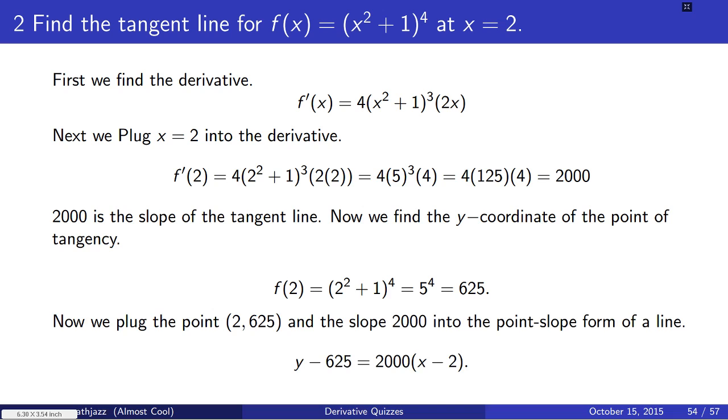So now we need to plug the point 2, 625 into the point-slope equation, with the slope being 2,000. We get y minus 625 equals 2,000 times x minus 2. And that is the tangent line for f at the point x equals 2.